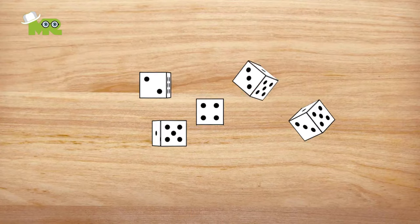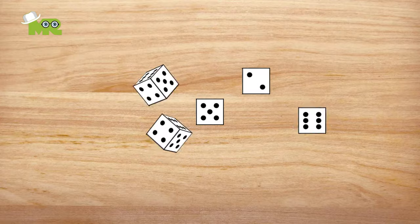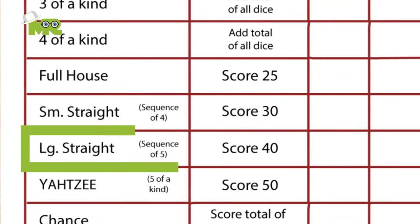If four numbers in a row are scored, a small straight occurs and 30 points are rewarded. If five numbers in a row are scored, a large straight occurs and 40 points are scored.